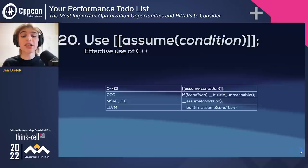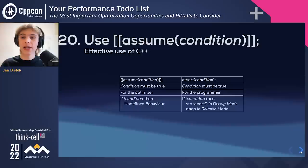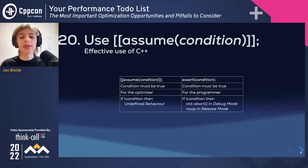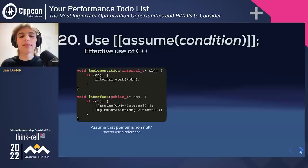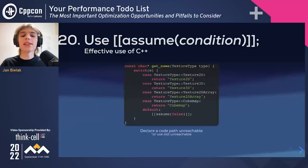Next is the [[assume]] attribute, which will be standardized in C++23 but has been available in most compilers as an extension. Assume is similar to an assert — it states that a given condition must be true. The key differences: assumes are meant for the optimizer while asserts are for programmers, and asserts are verified in debug mode and removed in release mode, while assumes are never verified. Assumes give the optimizer more knowledge: they can say a pointer argument is not null to remove redundant checks, that a pointer is aligned so the compiler can generate aligned instructions (you can also use std::assume_aligned), or that a piece of code is unreachable (C++23 also provides std::unreachable).